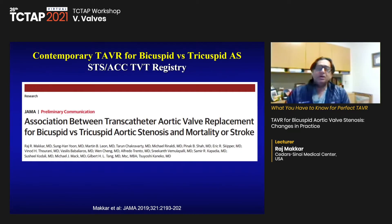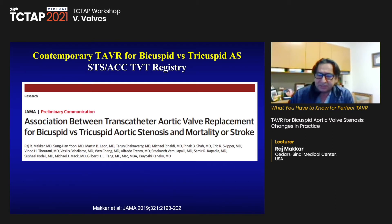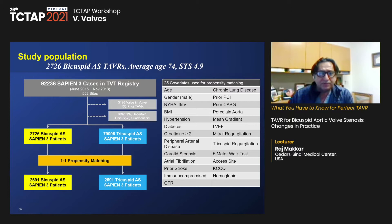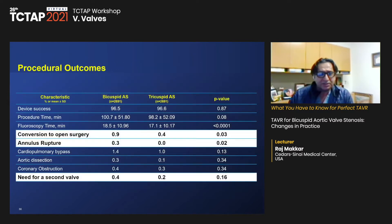Now, where is the data? From the TVT registry, we published an experience of 2,700-plus patients with bicuspid AS, mean age 74 and STS 4.9 — so intermediate and high-risk patients prior to low-risk approval. In a propensity-matched fashion, device success was high, aortic root injury was slightly higher than tricuspid AS but still less than 1%, and the need for coronary obstruction management or a second valve was also low.